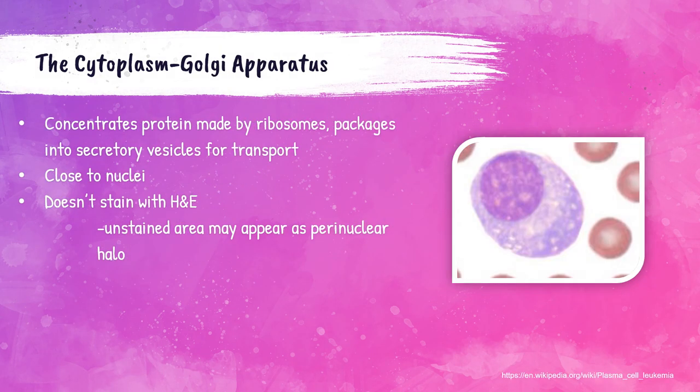The Golgi apparatus is an organelle that concentrates proteins made by ribosomes and then packages them for transport. It stays close to the nucleus and does not stain with the H&E stain. This unstained area can appear as a perinuclear halo, which is common in plasma cells. The photo shown here is a plasma cell in the peripheral bloodstream stained with a Romanowski-type stain. You can see a clearing around the nucleus — that is the perinuclear halo, which represents the Golgi apparatus.